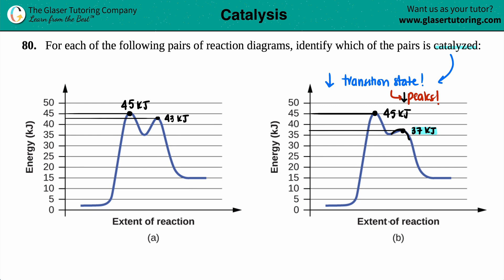The reaction is catalyzed. So in this case, letter B would be the catalyzed reaction, because it had the lower transition states, the lower peaks, which means that it would have the lower activation energy and the reaction would be faster. And that's it. I hope this helped.